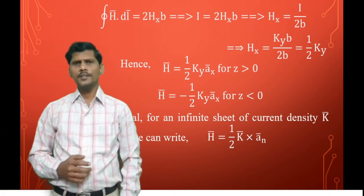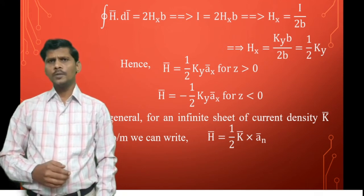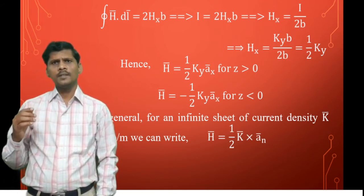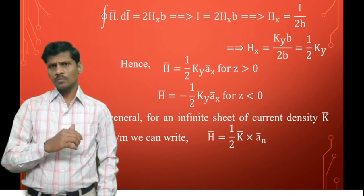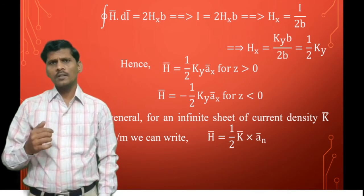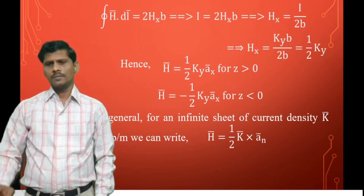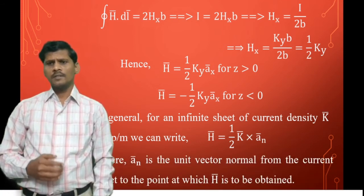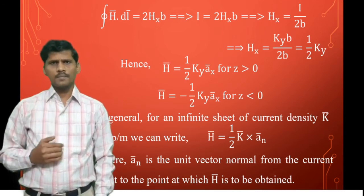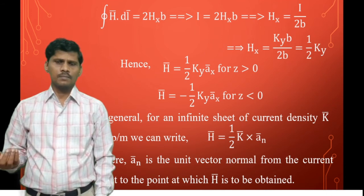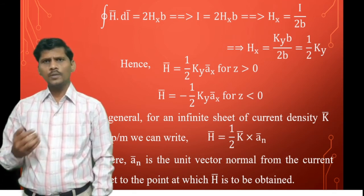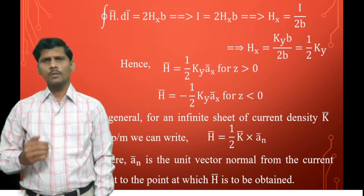In general, the magnetic field intensity due to an infinite sheet of current is H̄ = (1/2)·K̄ × n̄, where K̄ is the surface current density and n̄ is the unit vector normal to the current sheet. Here the surface current density is moving in the y-direction: K̄ = Ky·āy, and n̄ = āz. Since āy × āz = āx, we get H̄ = (1/2)·Ky·āx for z > 0, and H̄ = −(1/2)·Ky·āx for z < 0.